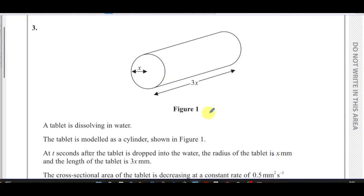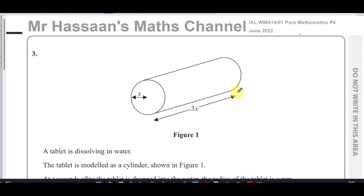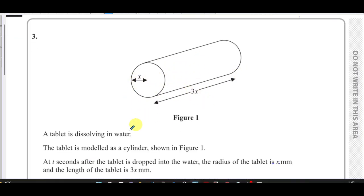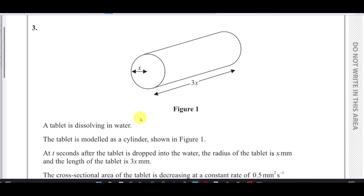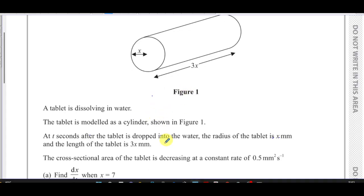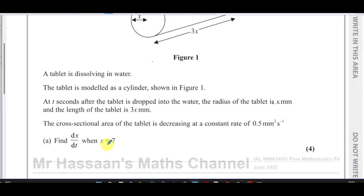This question is about related rates of change. It says a tablet is dissolving in water. The tablet is modeled as a cylinder as shown in figure one. The radius is x and the length of the cylinder is 3x. At t seconds after the tablet is dropped into the water, the radius is x millimeters and the length is 3x millimeters. The cross-sectional area is decreasing at a constant rate of 0.5 millimeters squared per second. Find dx/dt when x equals 7.